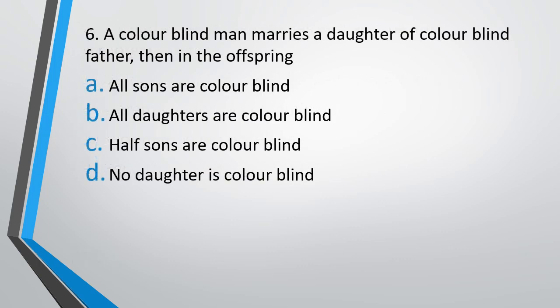Question 6. A colour-blind man marries a daughter of a colour-blind father. In the offspring: all sons are colour-blind, all daughters are colour-blind, half sons are colour-blind, or no daughter is colour-blind? The man is colour-blind and is marrying a daughter of a colour-blind father. The correct answer is option C — half of the sons are colour-blind.